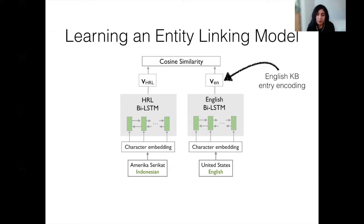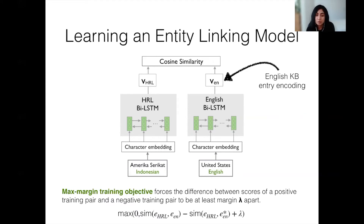To train the model, we use parallel entities in the high-resource language and English. For high-resource languages, such parallel entities are easily available from sources like the Wikipedia language links. For example, one training instance would be the parallel entity names for the entity United States in a high-resource language like Indonesian and English. Since we're effectively trying to rank the knowledge base entries for linking, we use a max margin objective with negative sampling as the training loss function. This objective function forces the cosine similarity between the input mention and the correct knowledge base entry to be at least a specified margin apart from the score with an incorrect entity link. So when we apply this trained model to an unseen input, the model should ideally assign the highest cosine similarity to the knowledge base entry that is the most appropriate link for the input.